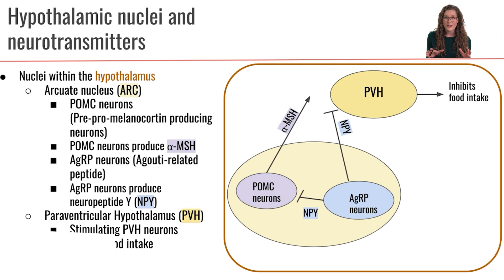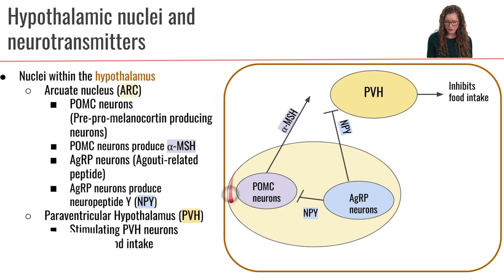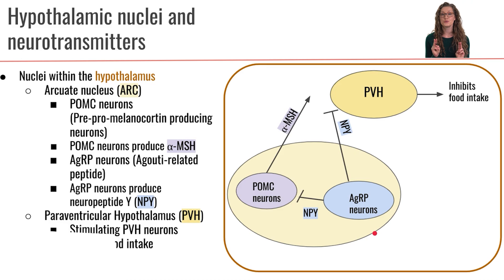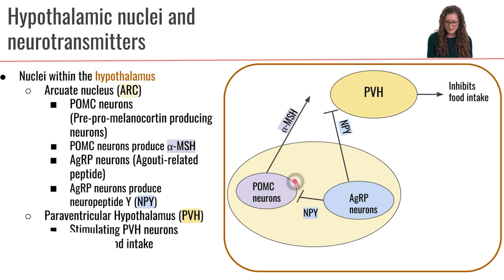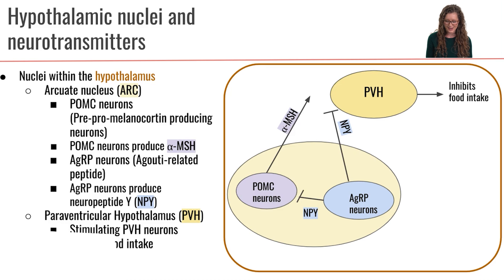So let's dig in a little bit more into the hypothalamus. There are going to be two nuclei that we'll focus on. The first is the arcuate nucleus, drawn here in a pale yellow color. Within the arcuate nucleus, there are two sub-nuclei — two different clusters of neurons. The first are called the POMC neurons, represented in a light purple. POMC stands for pre-pro-melanocortin-producing neurons.